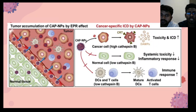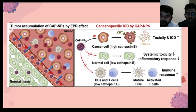As we can see in this slide, we are seeing tumor accumulation by CAP nanoparticles through an enhanced permeability and retention effect. In this slide, we can see that cancer cells have high cathepsin B and normal cells have low cathepsin B.